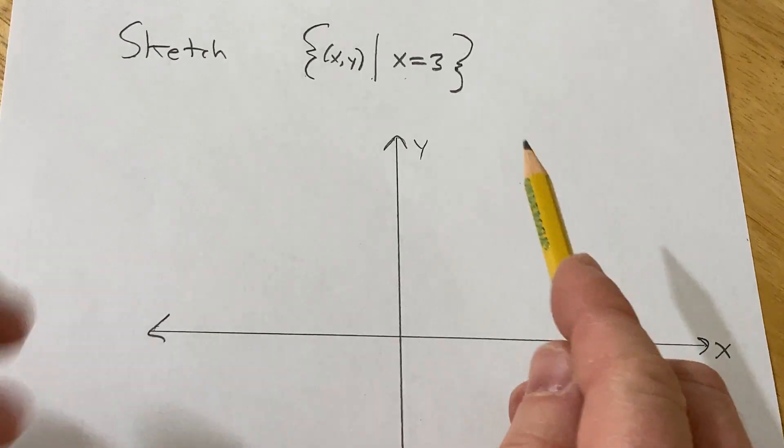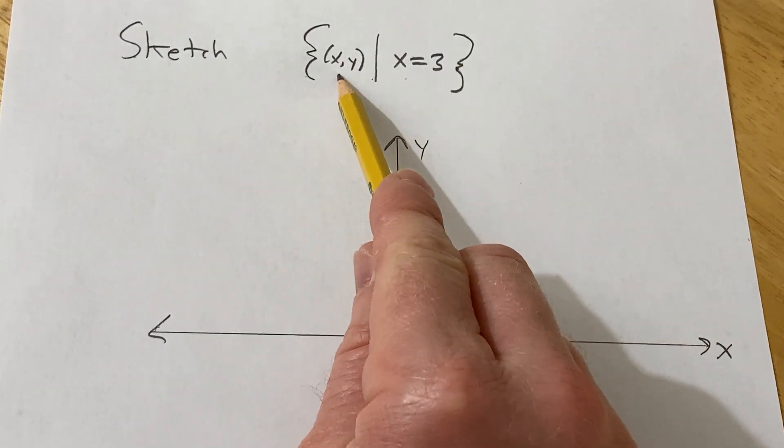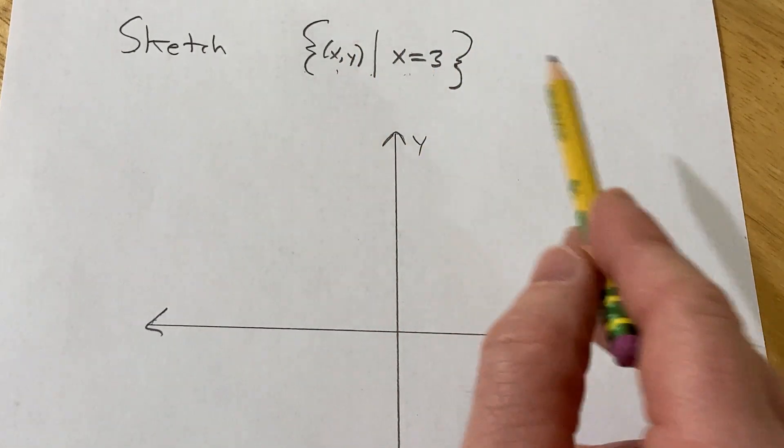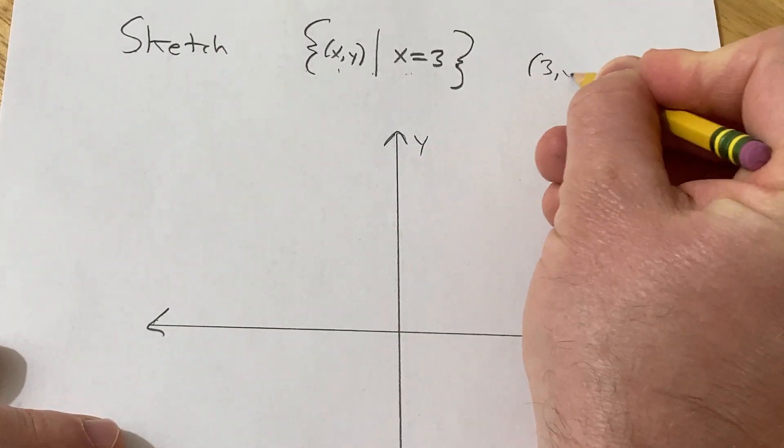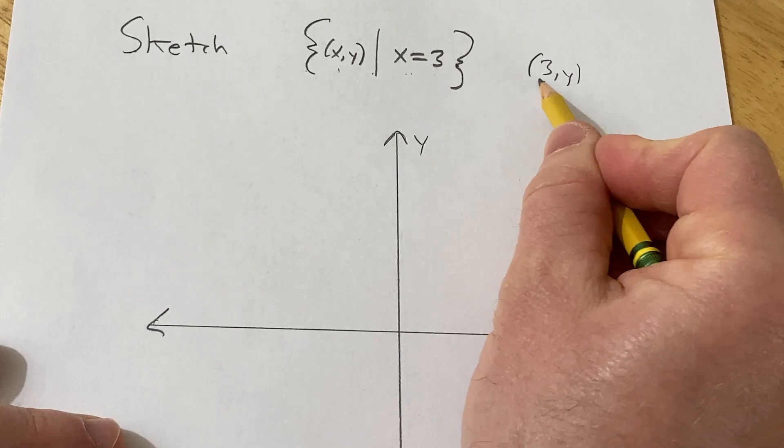To be in this set you have to be an ordered pair and x must be equal to 3. Basically every point in this set has the form 3 comma y. No matter what, x is 3.